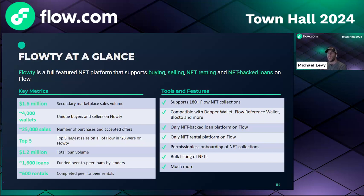Continuing on, over 4,000 unique wallets have interacted with Floaty, and we hope to see that number increase drastically with the growing ecosystem. Users have funded over 1.2 million in NFT-backed loans across 1,600 loan transactions, unlocking liquidity for NFT holders and passive income opportunities for lenders. And finally, we've seen hundreds of users take advantage of utility options on Flow by using Floaty's NFT rentals. If you're creating a collection on Flow, Floaty is an off-the-shelf marketplace that can be set up in seconds using our developer documents.